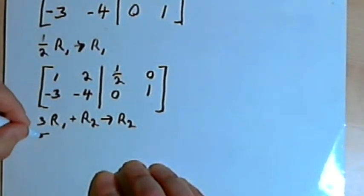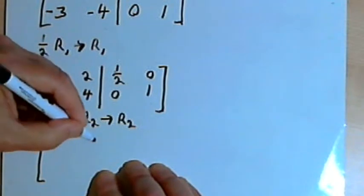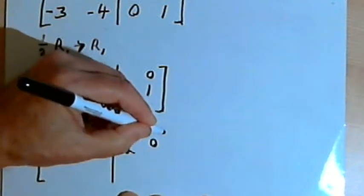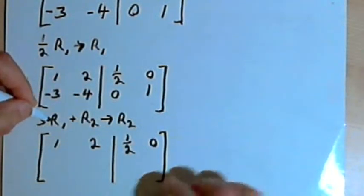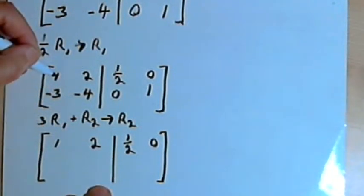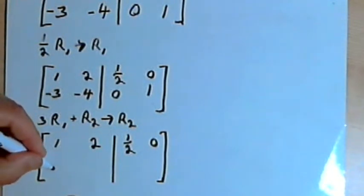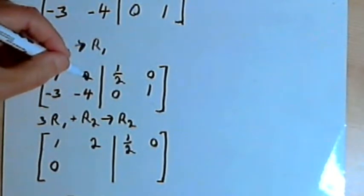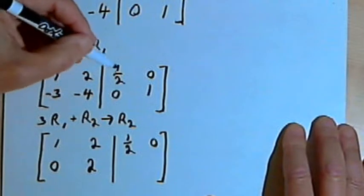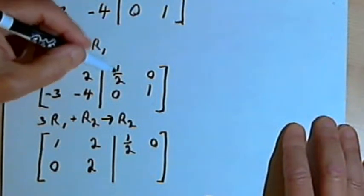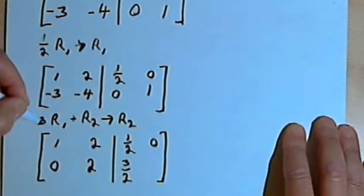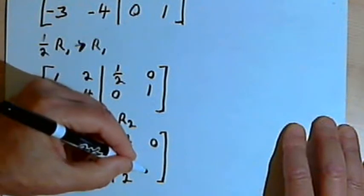The first row stays the same: 1, 2, 1/2, and 0. Now multiplying by 3 and adding to row 2: 3 times 1 is 3, plus negative 3 is 0. 3 times 2 is 6, plus negative 4 is positive 2. 3 times 1/2 is 3/2, plus 0 is 3/2. And 3 times 0 is 0, plus 1 is 1.